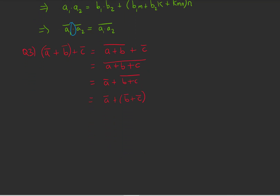And for question 4, the same thing happens with congruence classes being multiplied. The congruence class of a times the congruence class of b times the congruence class of c equals the congruence class of ab times the congruence class of c, which equals the congruence class of abc, which equals the congruence class of a times the congruence class of bc. So multiplication is also associative.